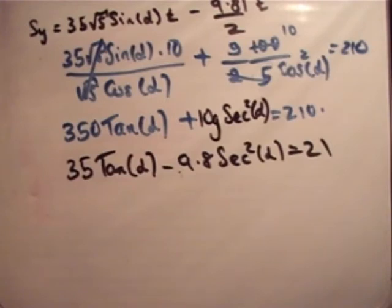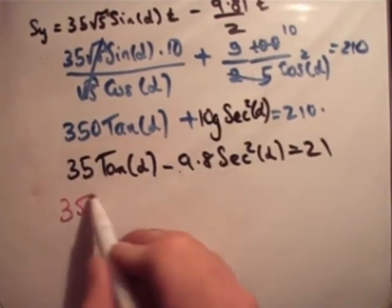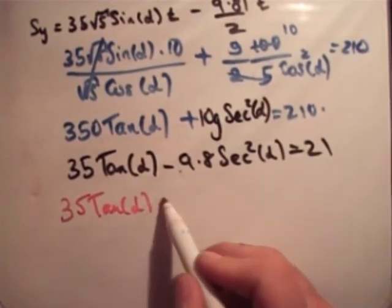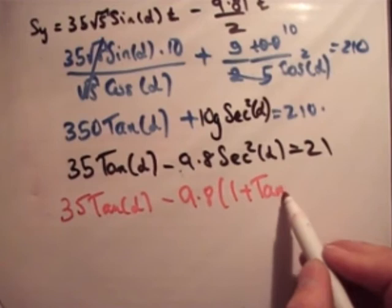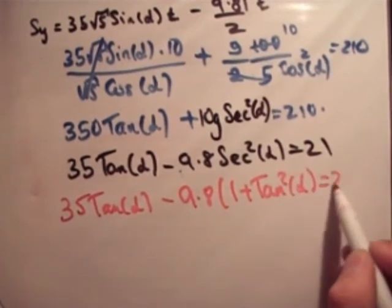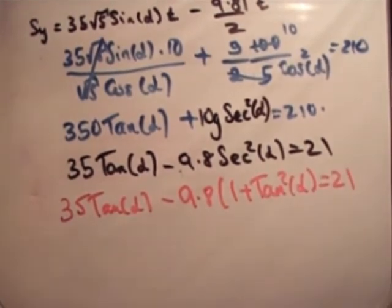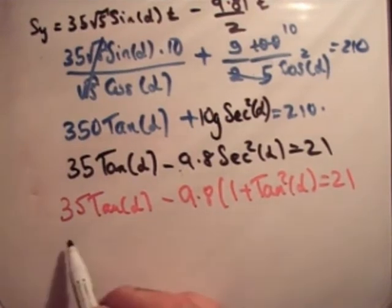So the next thing we need to do is convert the sec² into something with tan. Now, the reason we need to do that is as follows: we want to get a quadratic in order to get the value for alpha. And sec²(α) = 1 + tan²(α) because we did that in part 1. So what we're starting to see is a quadratic in tan. So we get 35·tan(α) = 21 + 9.8·(1 + tan²(α)).